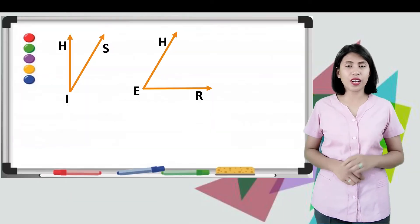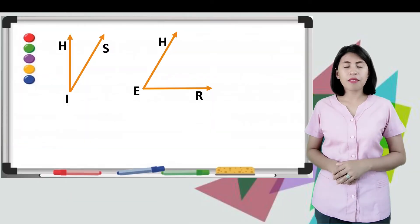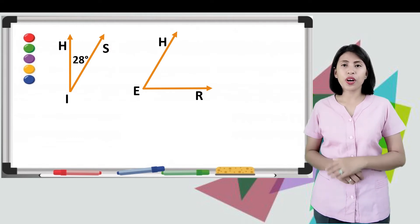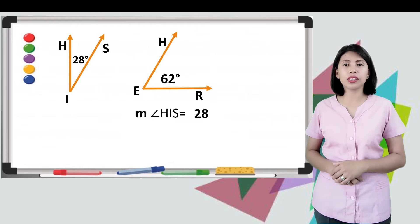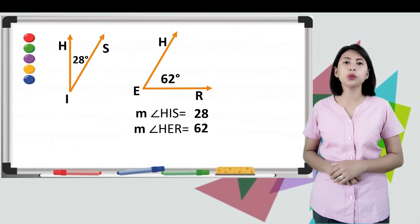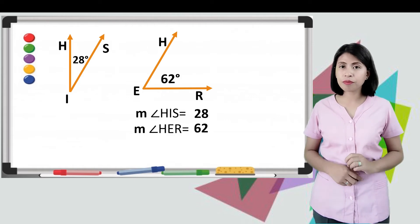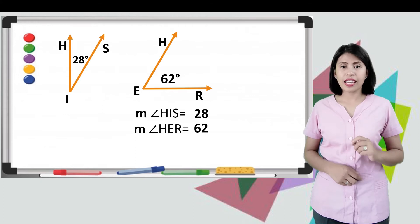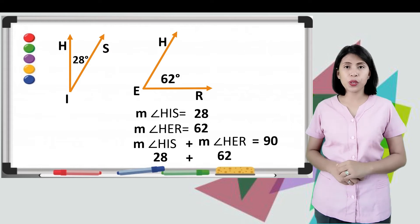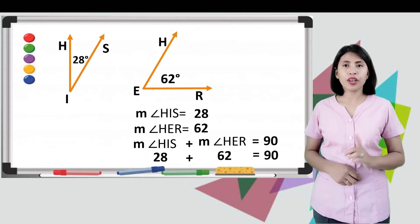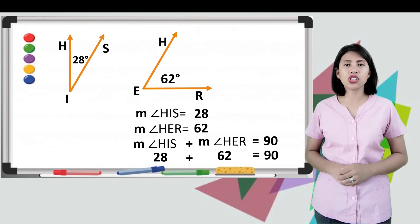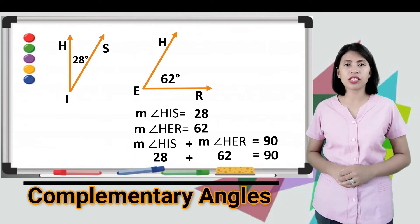Consider another example. We have angle HIS and angle HER, wherein measure angle HIS is equal to 28, and measure angle HER is equal to 62. Are they complementary? Yes, because 28 plus 62 is equal to 90. Therefore, angle HIS and angle HER are complementary angles.